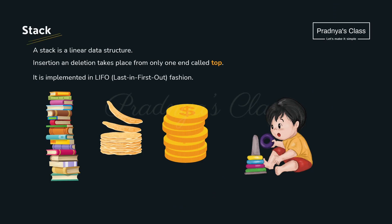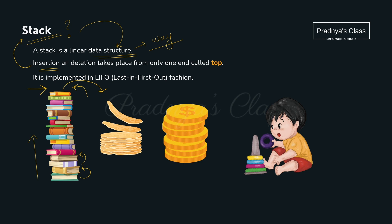First of all, let's try to understand what is a stack. Stack is a data structure — a particular way of organizing and storing data. Let's understand how data gets stored in a stack. Look at the example — here is a stack of books. We have kept books one above another. If you want to keep any book, you have the restriction of keeping it only on the top. Even if you want to take out any book, you need to take it from the top. It means insertion and deletion takes place only from one end, generally called the top of the stack.